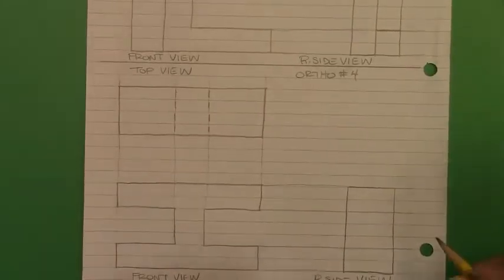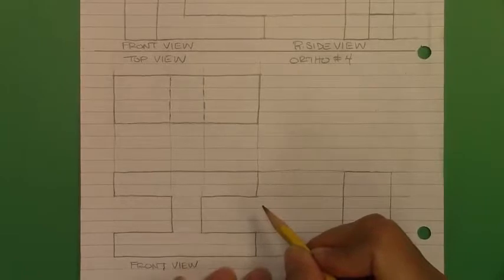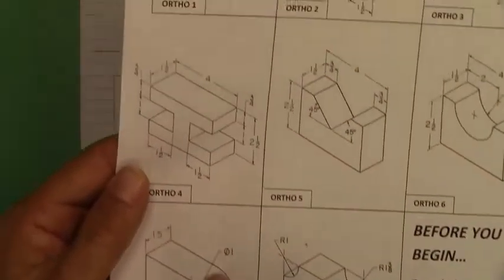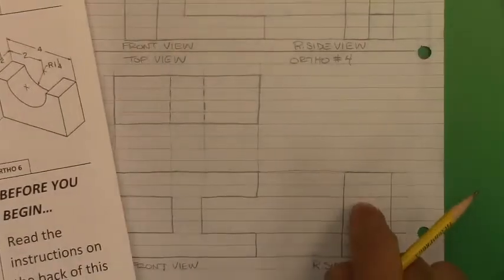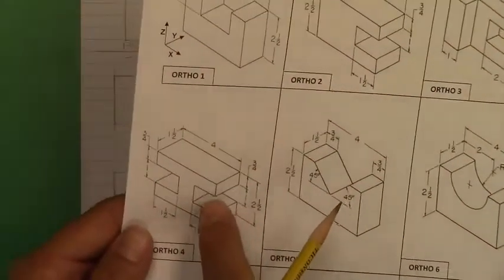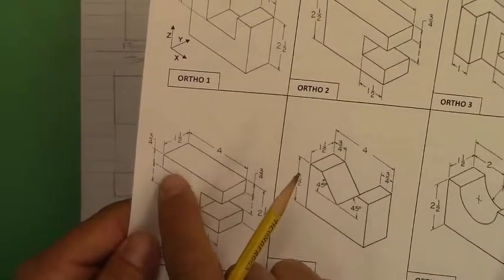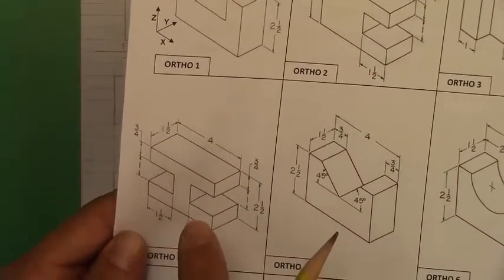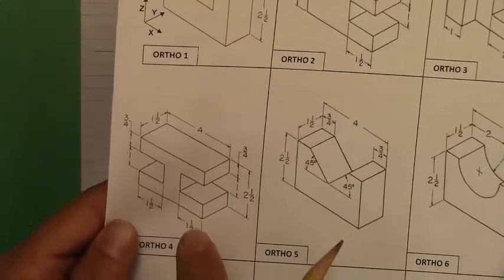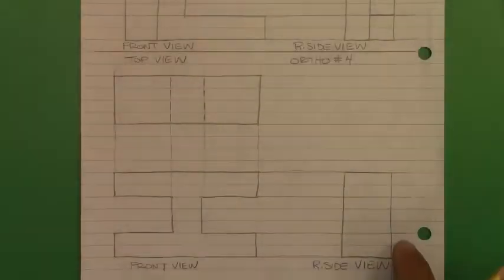Now this one, keep in mind, we're looking at this object from a right side view perspective. So we know there's a cutaway here. We can see that. And let's keep in mind that there's something behind it we can't see.